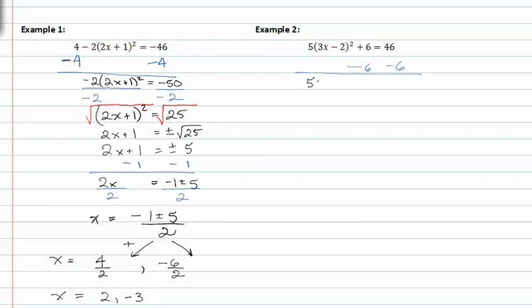Now I have 5(3x - 2)² = 40. Now I'm going to divide by 5 to get that exponent by itself. Now I have (3x - 2)² = 8.